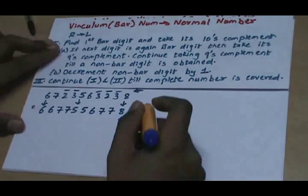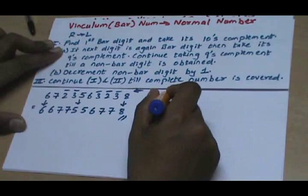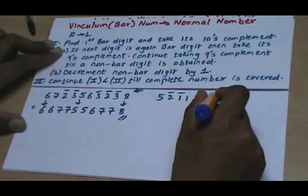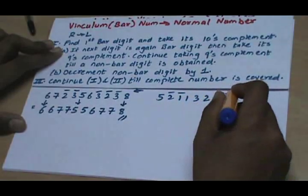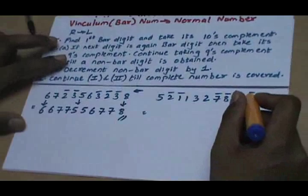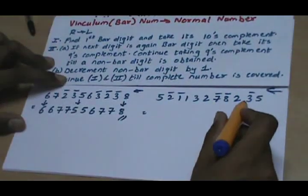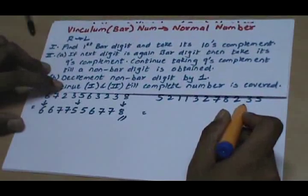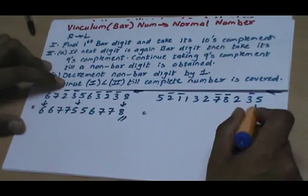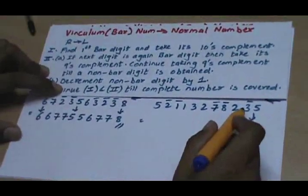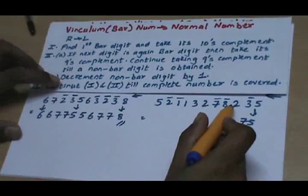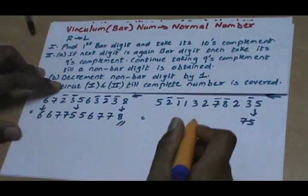Let's take another example: 5, 2̄, 1̄, 1, 3, 2, 7, 8, 2, 3, 5. Following the same procedure from right to left, the first bar digit is 3̄. We write 5 as it is and take the tens complement of 3, which gives 7. As the next digit is a non-bar digit, we decrement it by 1, giving 1.